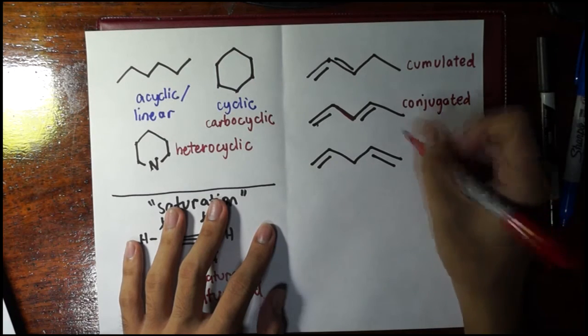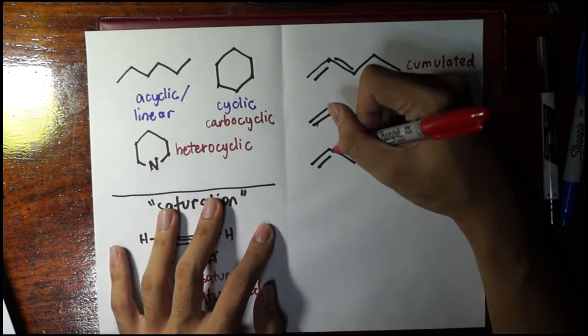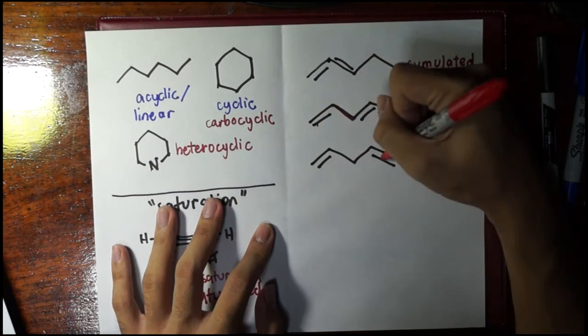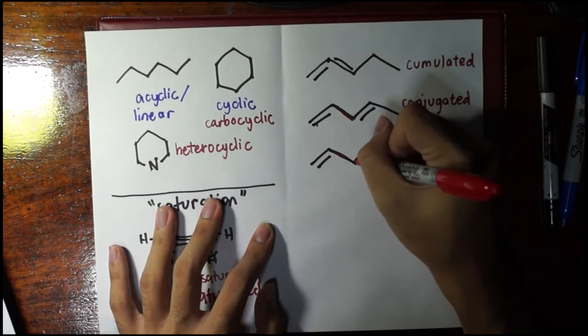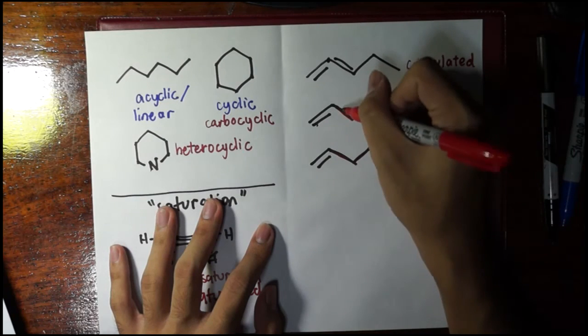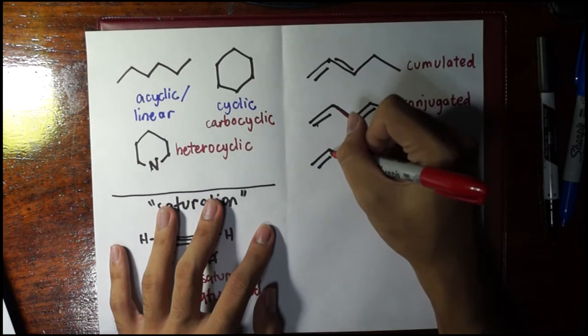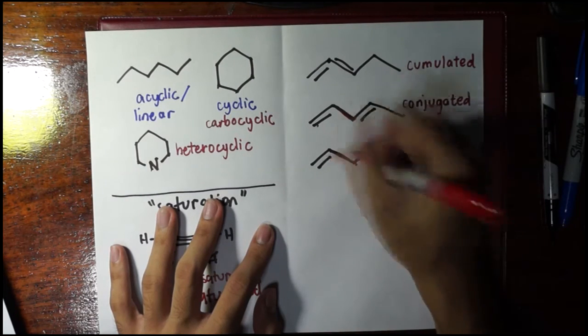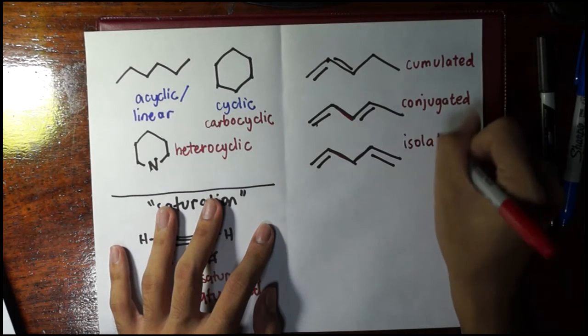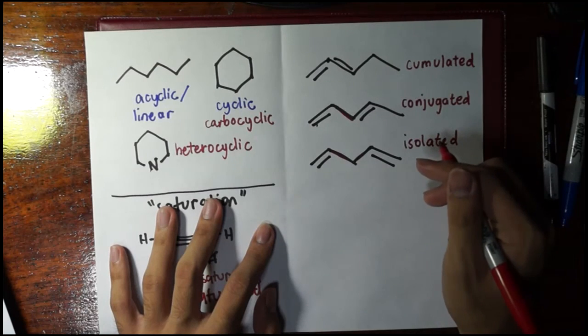But, if the two double bonds are separated by more than one single bond, I mean, for example, here between these two double bonds, we have two single bonds. It's not anymore conjugated, of course, because in conjugated, we have only one single bond between. It's not accumulated. So, if this has two or more single bonds between them, you would say that this is isolated because, as it looks like, the two double bonds are isolated away from each other. All right?